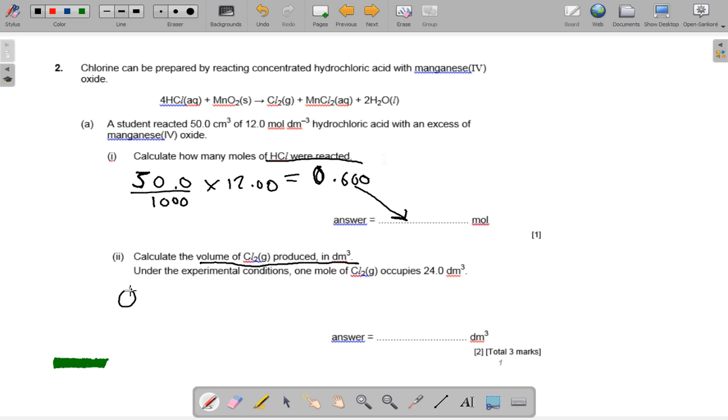So now if we look, 0.6 over 4, the molar ratio is 4 to 1 there, so that's 0.15 moles. And 0.15 times 24 is 3.6 decimeter cubed. And that's all you need to do because we don't need to convert it to centimeter cubed.